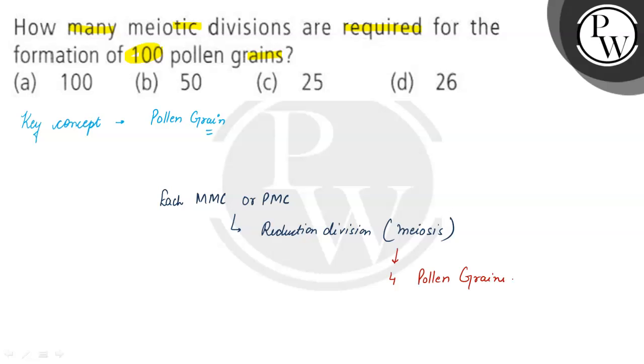So to produce 100 pollen grains, we need 25 meiotic divisions. I hope you understood that the correct option is C.